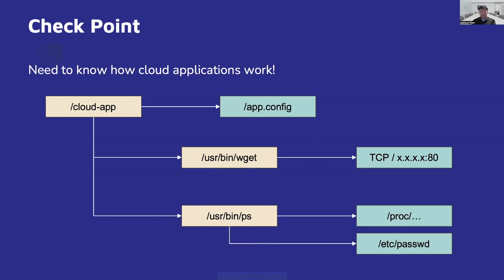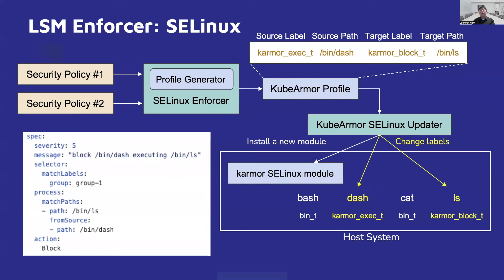Then, how about SELinux? SELinux provides label-based access control. So we need to define the allowed operations between two security labels, which are also known as security rules, and update the labels of actual files to enforce the security rules. Here, we have the same policy. Unlike AppArmor, SELinux doesn't have something similar to a security profile. So, for consistency, KubeArmor's SELinux enforcer first generates a KubeArmor security profile.